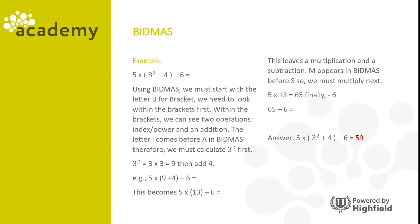If you didn't have a calculator, let's look at how to multiply thirteen by five. We lay out the question, then multiply five by three, which is fifteen — carry the one into the tens. Then multiply five by one, which is five, and add the remaining one to give us sixty-five.